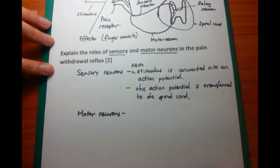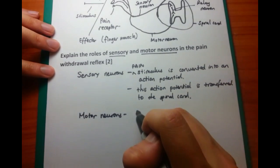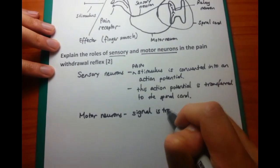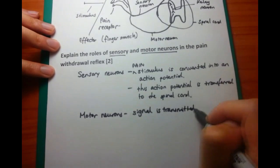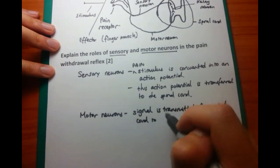Let's talk about the motor neuron action itself. So what happens is that the signal is transmitted from the spinal cord to the finger muscles. The finger muscles are also known as effectors, because they are the action which occurs as a result of the stimulus.